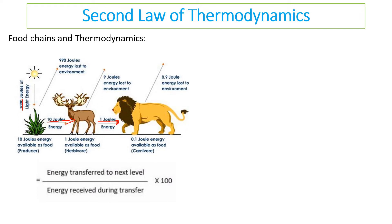The percentage efficiency you need to know is: energy transferred to the next level divided by energy received. For example, energy transferred to the next level was 10 joules, divided by 1,000 joules received — so 10 divided by 1,000, times 100%.